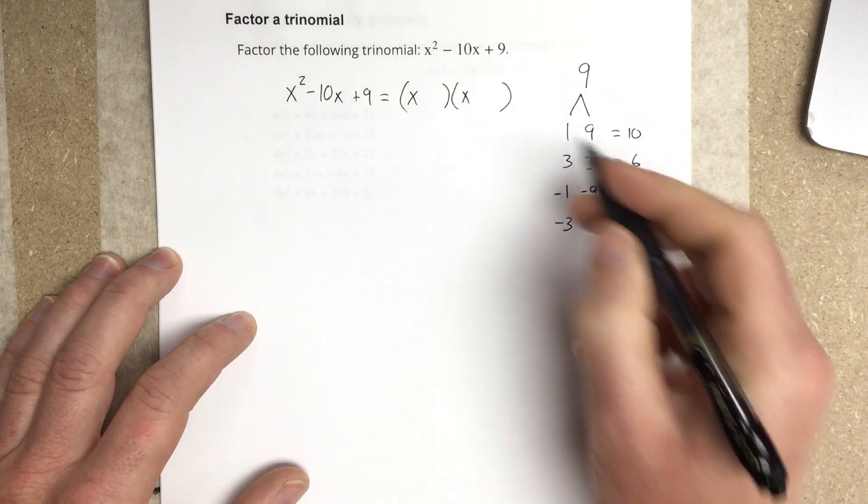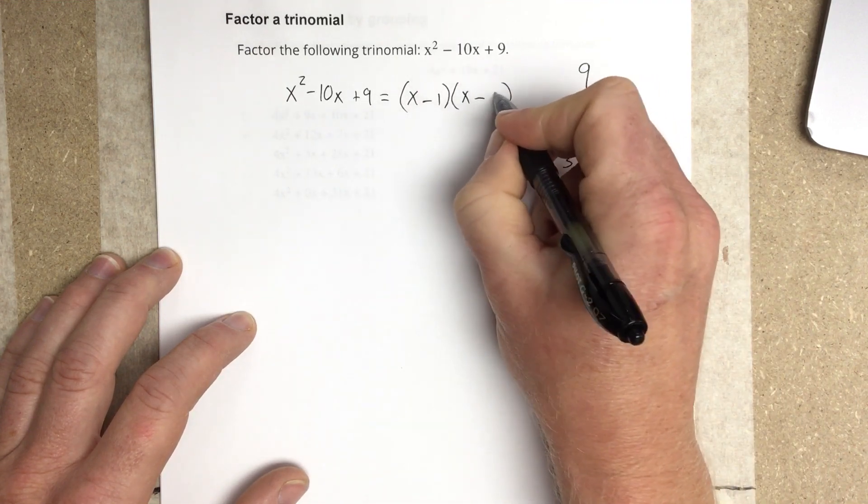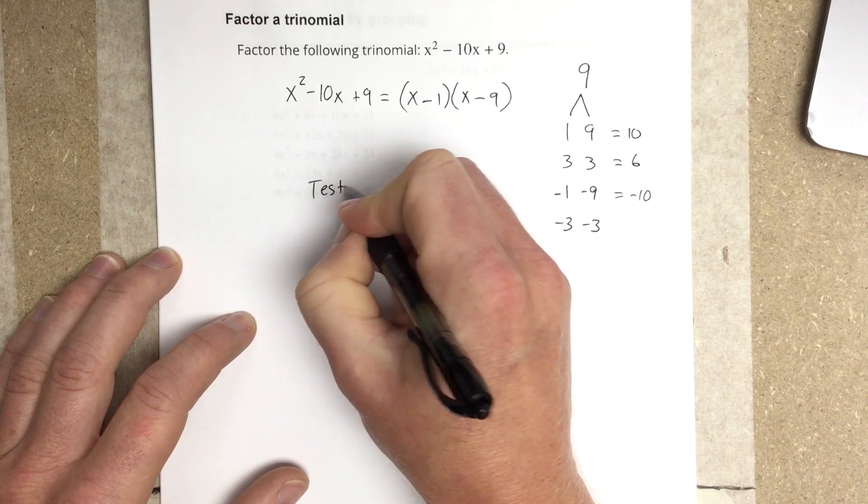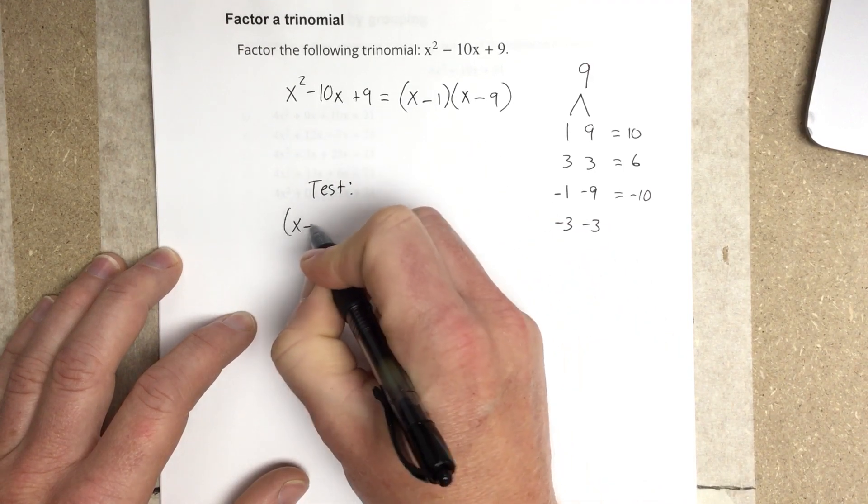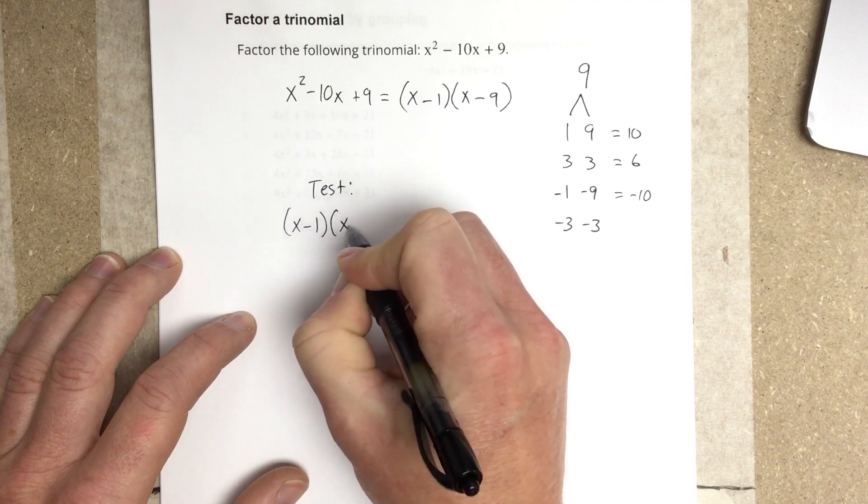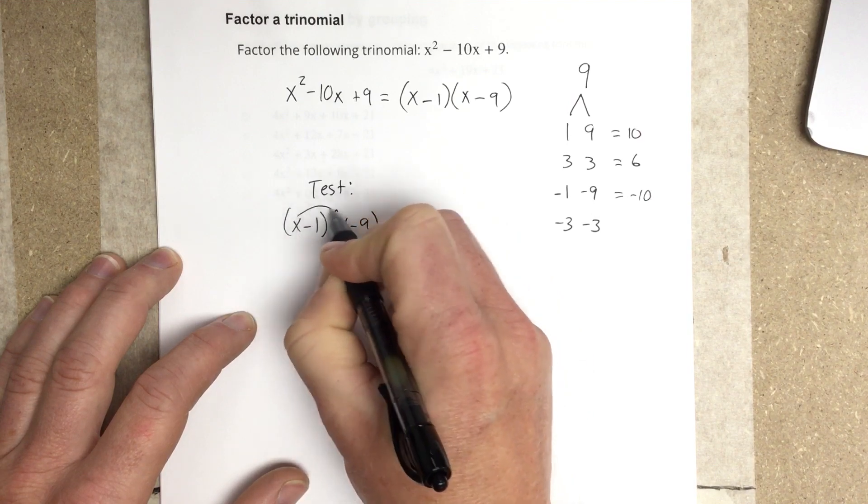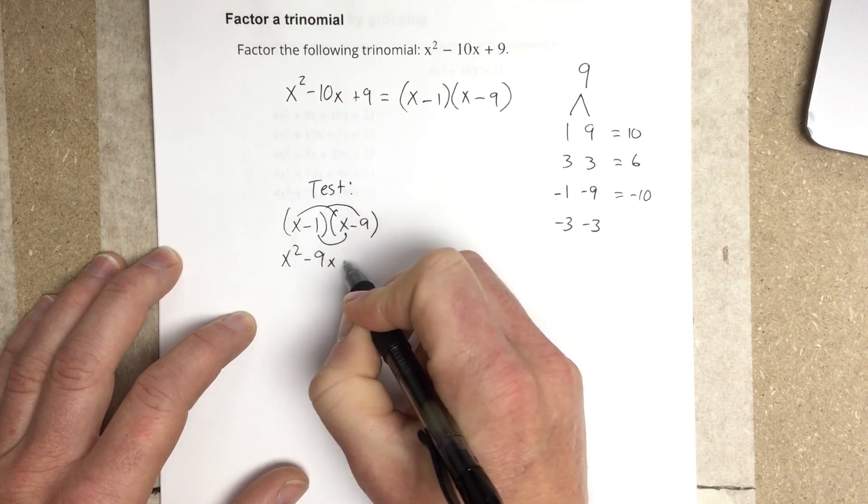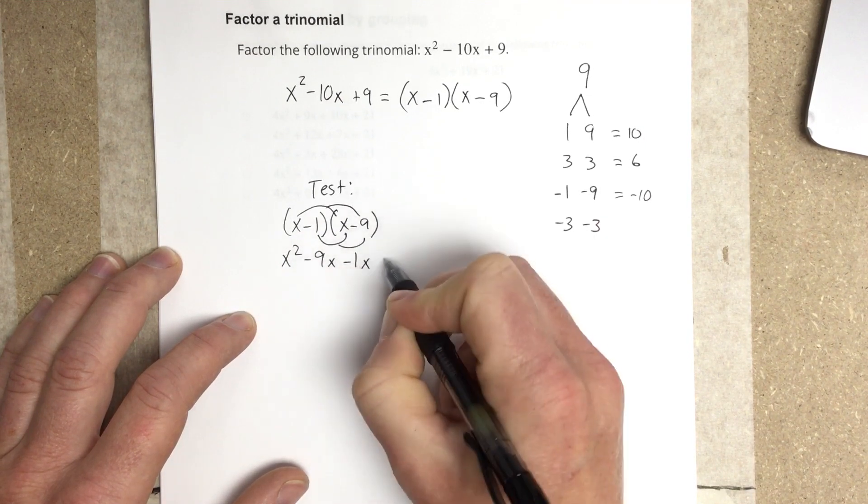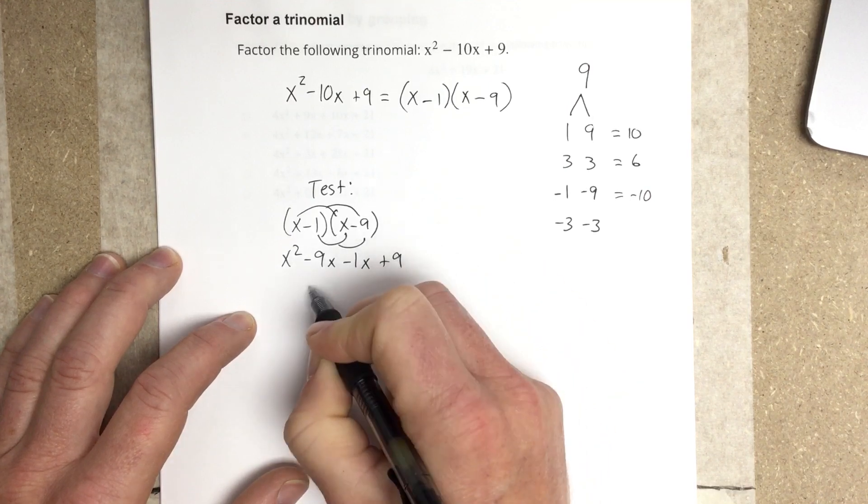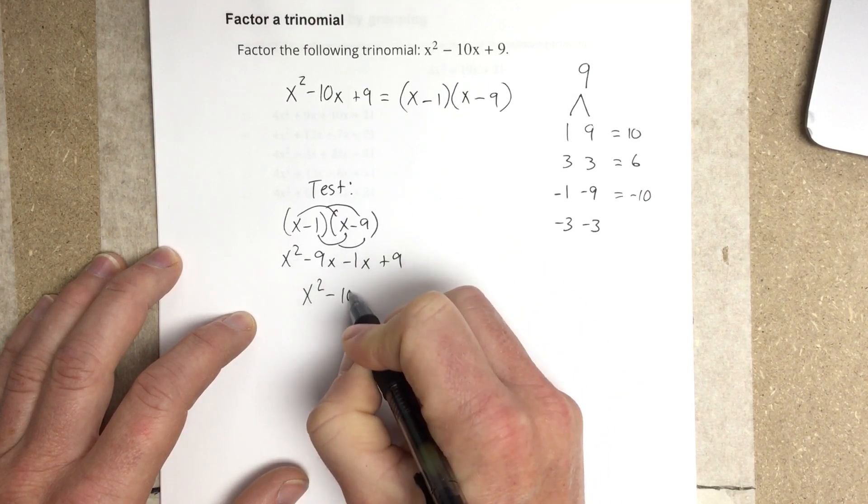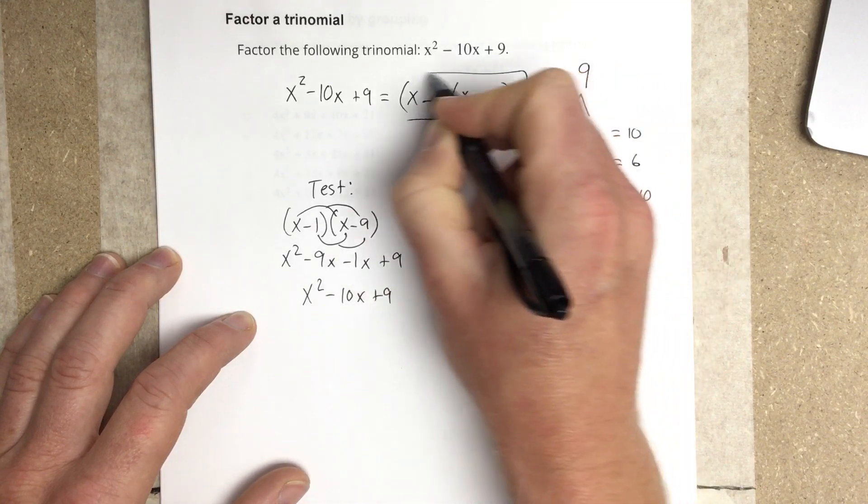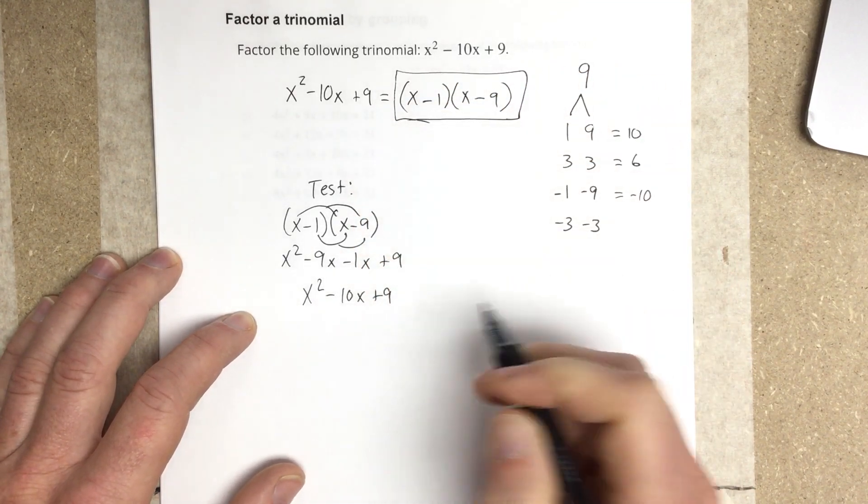And then our two factors would be minus 1 and minus 9. And then I can test it again to double check. x minus 1, x minus 9. Distribute x squared minus 9x minus 1x plus 9. That gives you x squared minus 10x plus 9. And that tells you that this was the factored form for that trinomial.